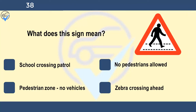What does this sign mean? School crossing patrol, no pedestrians allowed, pedestrian zone, no vehicles, or zebra crossing ahead. Look well ahead and be ready to stop for any pedestrians crossing or about to cross the road. Also check the pavements for anyone who looks like they might step or run into the road.